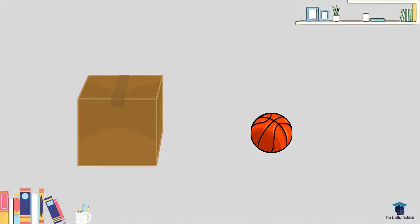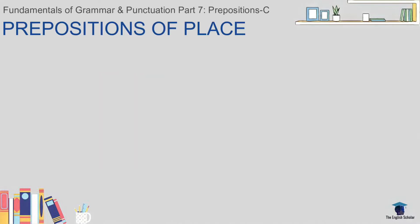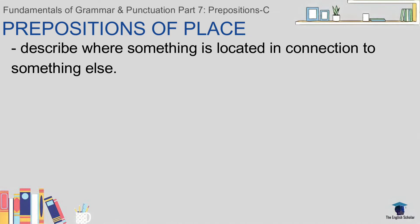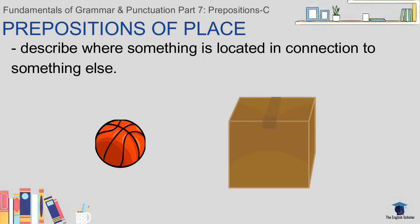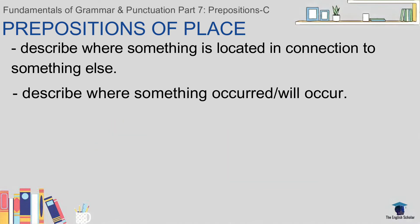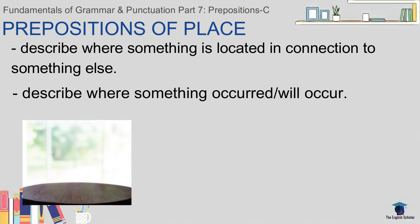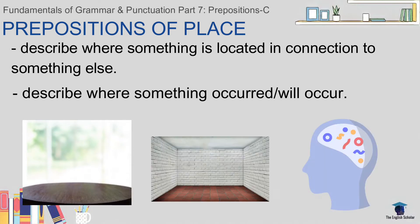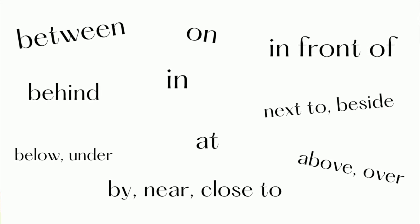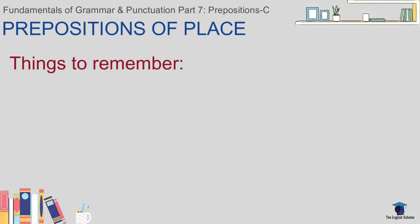In this video we will use a box and a wall to illustrate each preposition for easier understanding. A preposition of place describes where something is located in connection to something else — in this case, two different things are always involved. A preposition of place also describes where something occurred or will occur, like 'on the table,' 'at a corner,' 'in mind,' and more. There are 15 prepositions of place, but some of them are grouped because they express the same meaning.